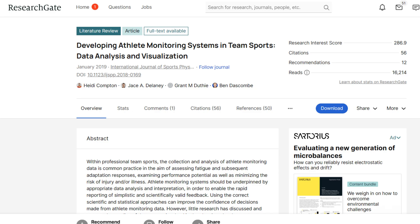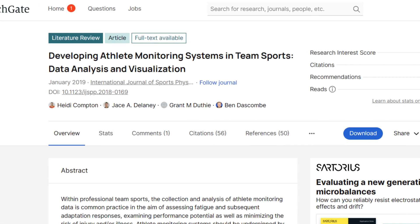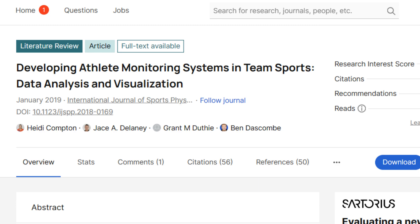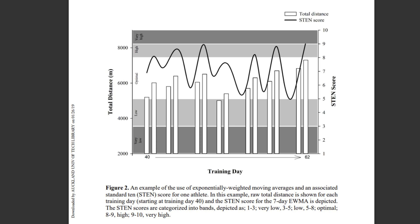Here we have an example from Heidi Thornton, now Heidi Compton, from a paper entitled Developing Athlete Monitoring Systems in Team Sports: Data Analysis and Visualization. I highly recommend taking a look at this paper — I'll link to it below — as it has really interesting and very practical recommendations for visualization and feedback. In this example, there's a traffic light system of colors, and we have total distance for a player over time with the corresponding STEN score overlaid onto this traffic light coloring system.